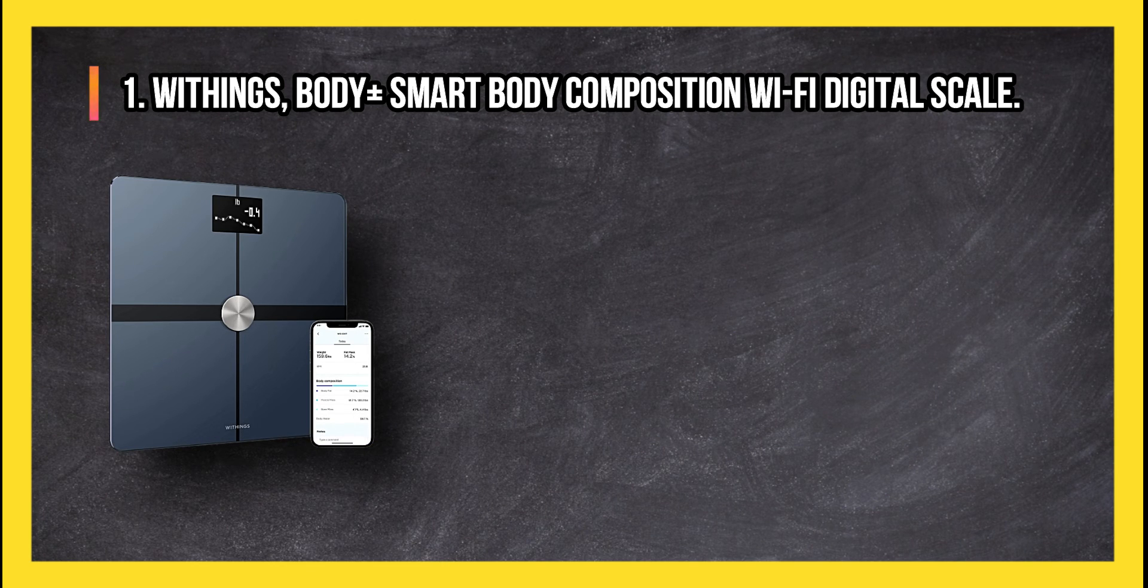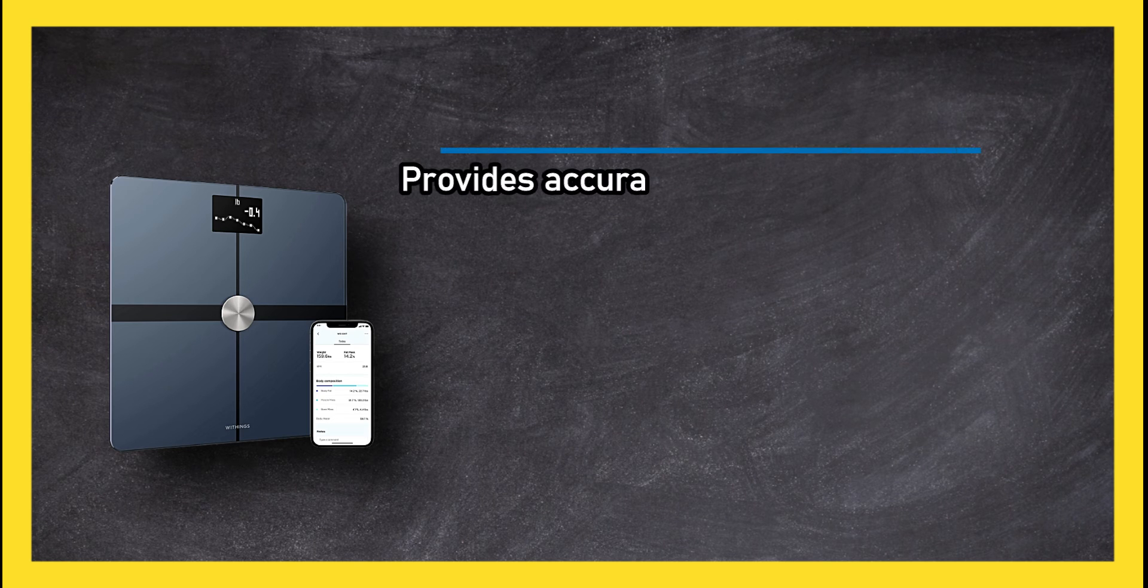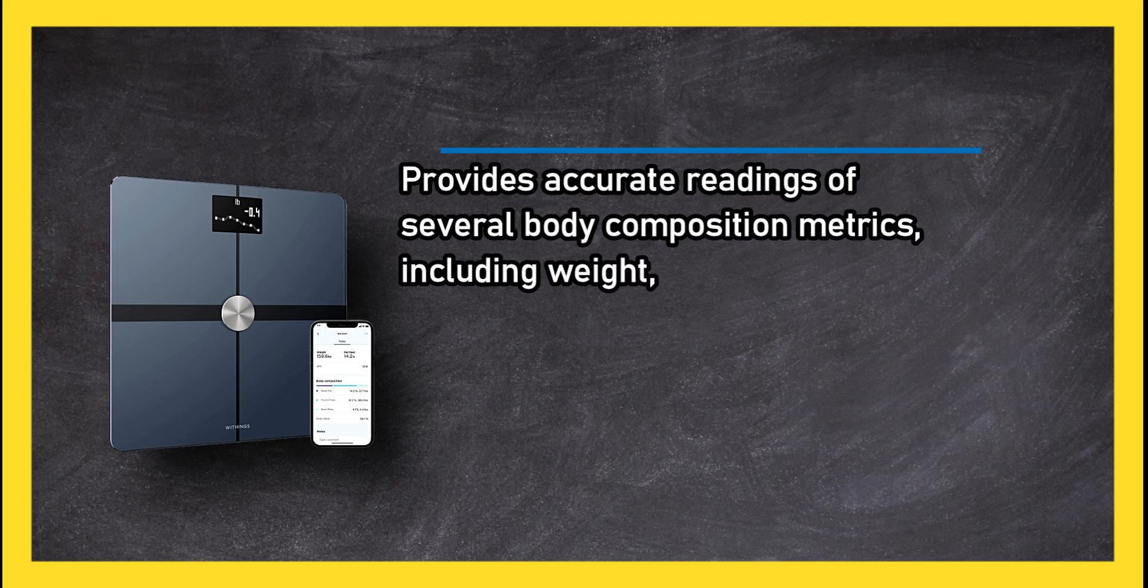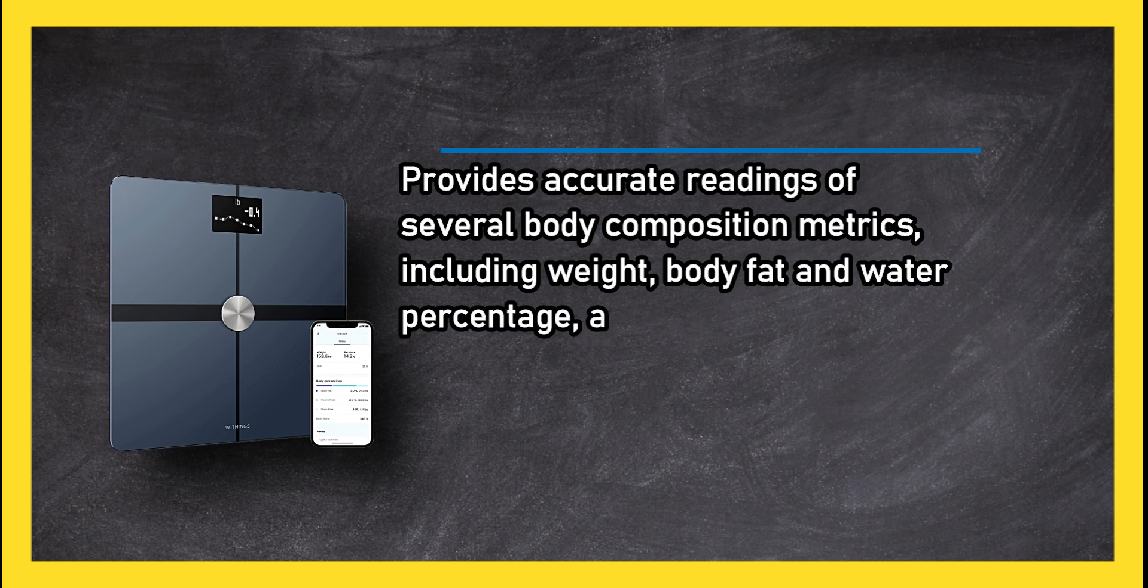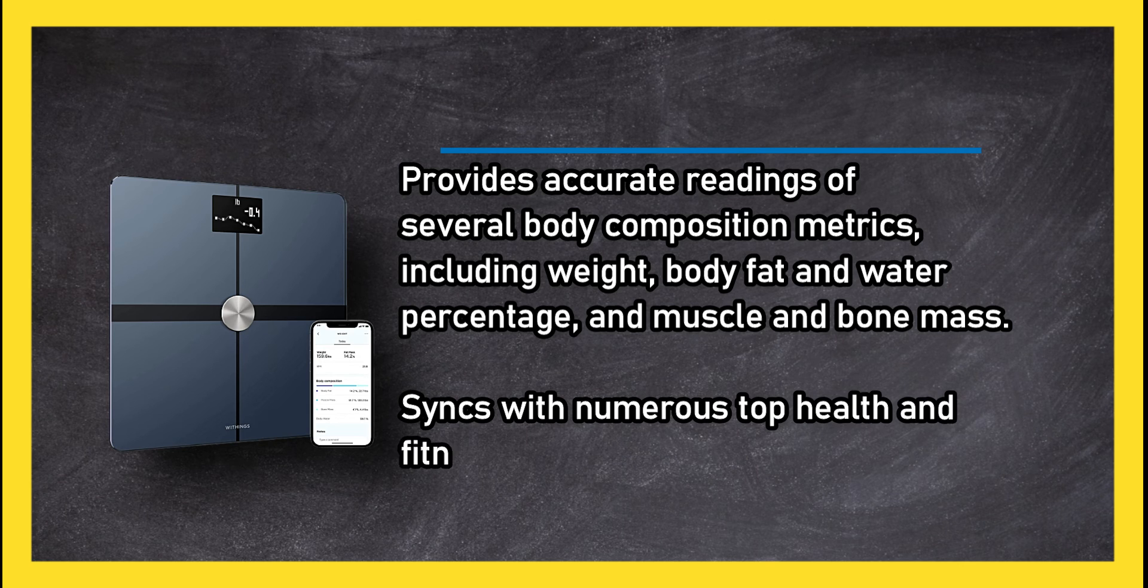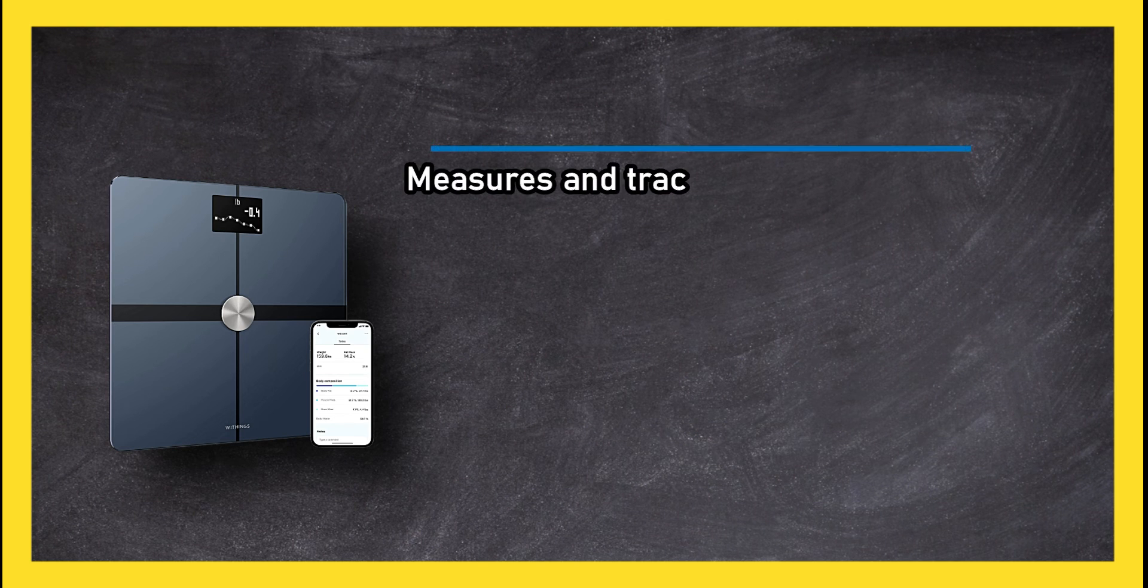At number one, the Withings Body Plus Smart Body Composition Wi-Fi Digital Scale provides accurate readings of several body composition metrics including weight, body fat and water percentage, and muscle and bone mass. Syncs with numerous top health and fitness apps and smart devices.